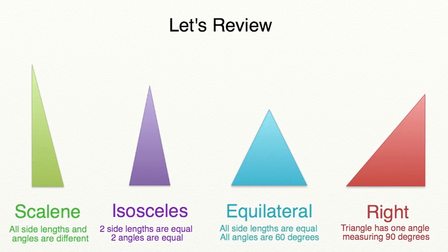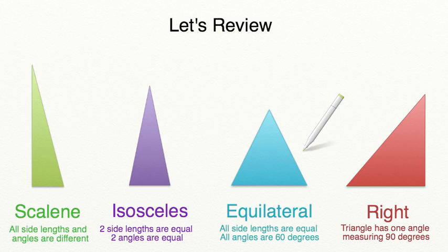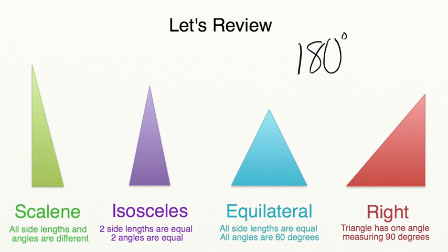Let's take a moment to review what we've learned in today's lesson. A scalene triangle has all side lengths with a different measurement and all angles with a different measurement. An isosceles triangle has two side lengths that are equal and two angles that have the same measurement. An equilateral triangle has all side lengths that are the same and all angles equal to 60 degrees, because the sum of all three angles in a triangle always equals 180 degrees. And lastly, a right triangle has one angle measuring 90 degrees, which is often marked with a square in the corner.